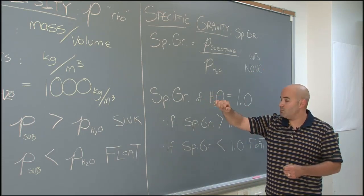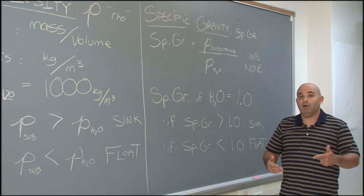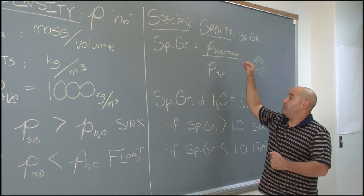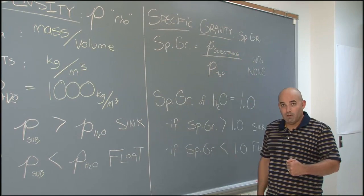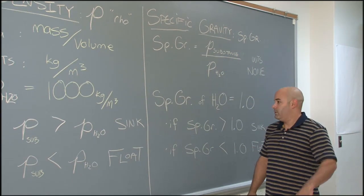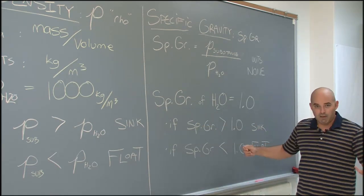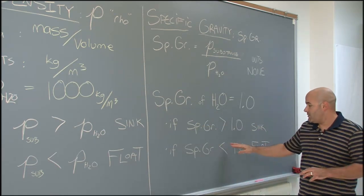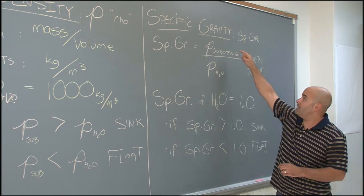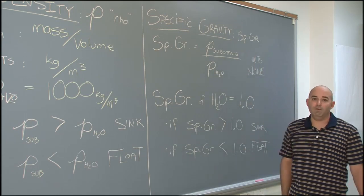Just like density of water, we need to memorize the specific gravity of water. If you forget, I'll bet you can figure it out real quick. What's the density of water divided by the density of water? One. If the specific gravity is greater than one, we automatically know it will sink. If the specific gravity is less than one, that tells me the density of something is less than the density of water, that means it's going to float.